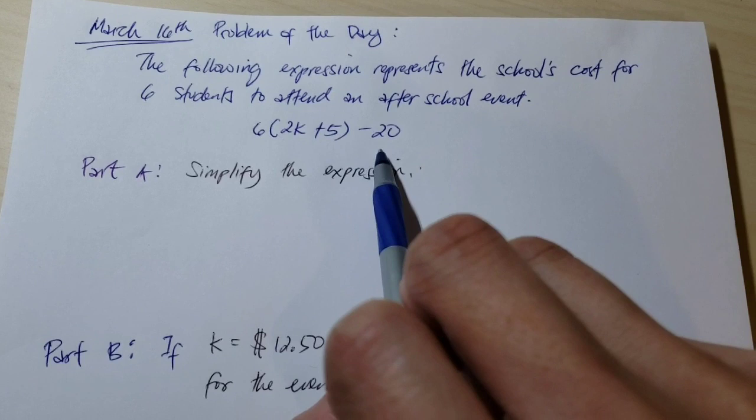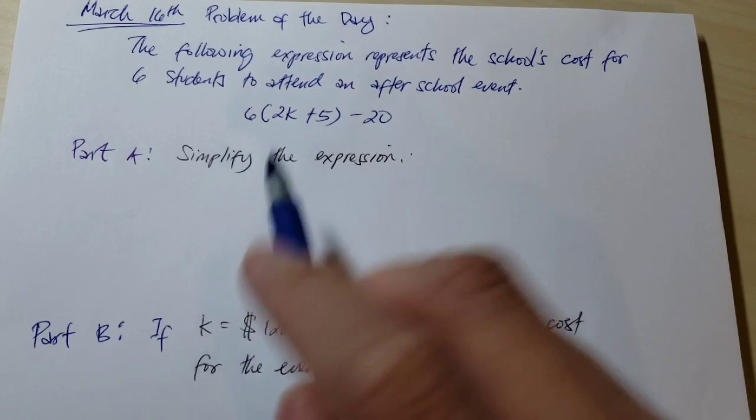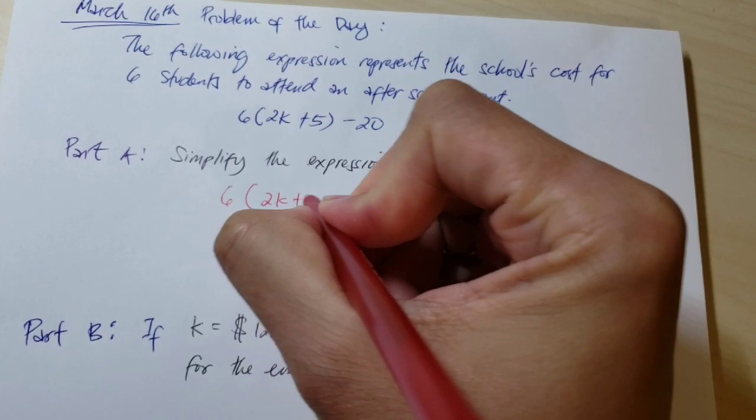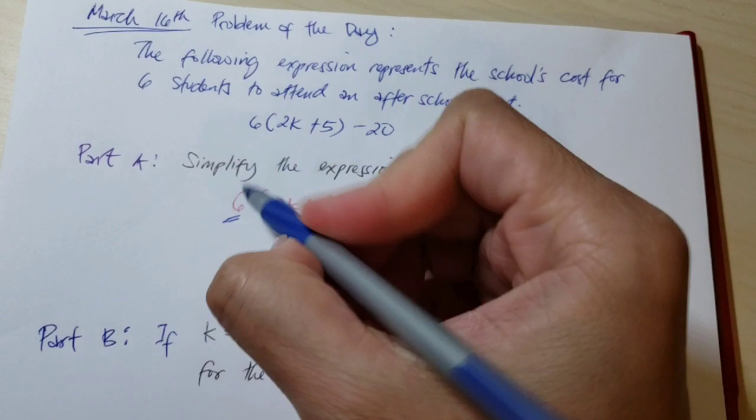Part A: Simplify the expression. To simplify the expression, you need to apply the distributive property first. We have 6 times the quantity 2k plus 5, minus 20. You see this factor outside, what you need to do is multiply 6 to the terms inside the parentheses.